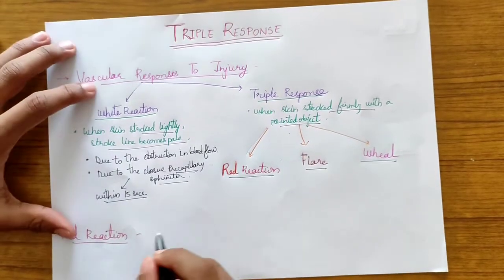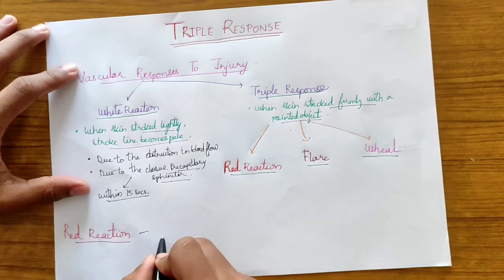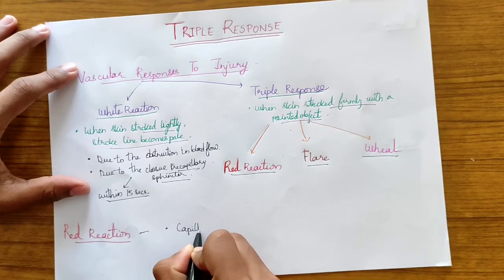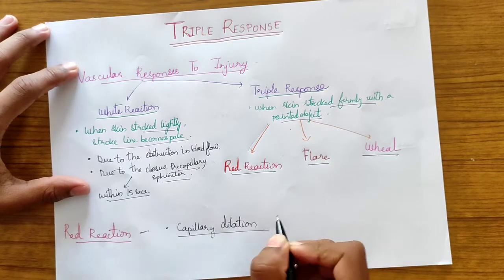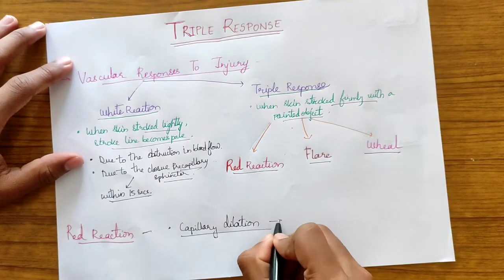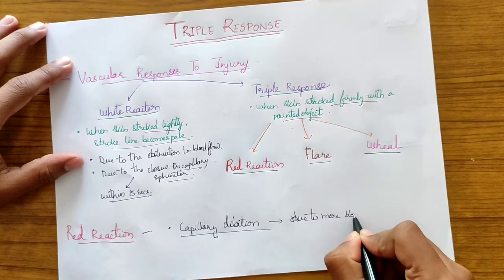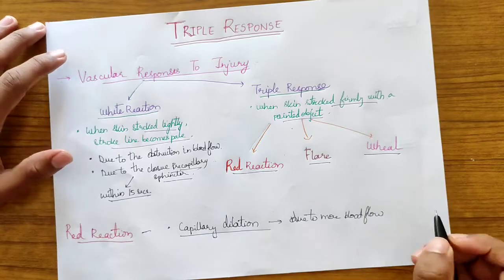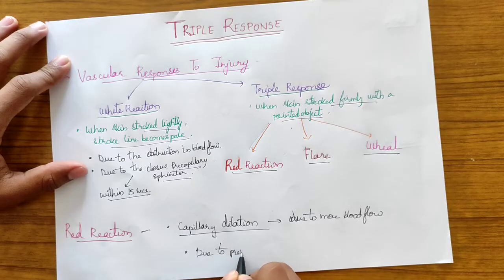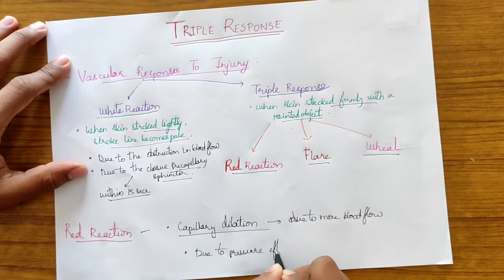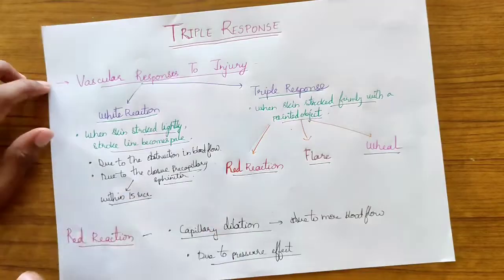The first component is the red reaction. The skin becomes red because the capillaries get dilated, leading to more blood flow. Why do the capillaries dilate? Due to the pressure effect of the stroke. Due to the pressure effect, the capillaries get dilated, causing the red reaction component of the triple response.